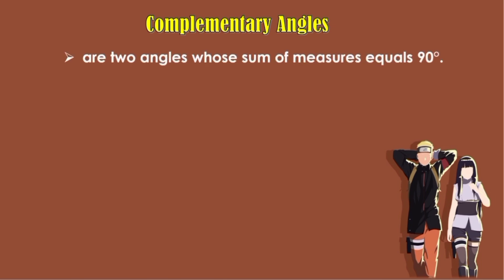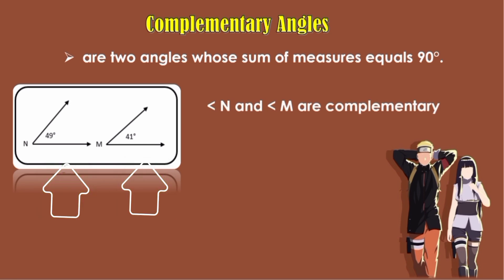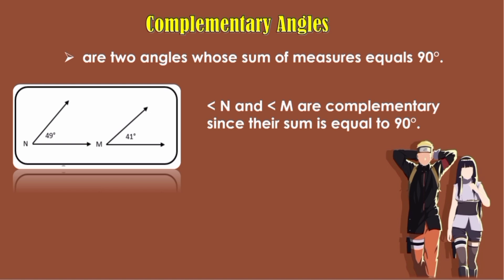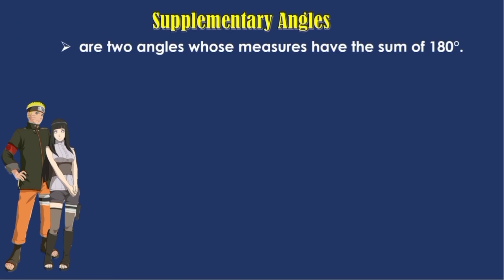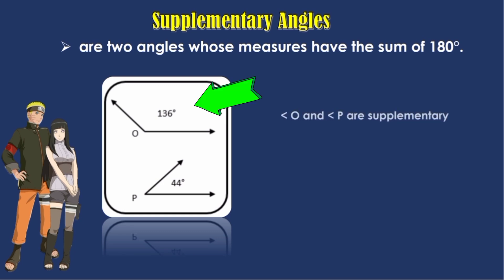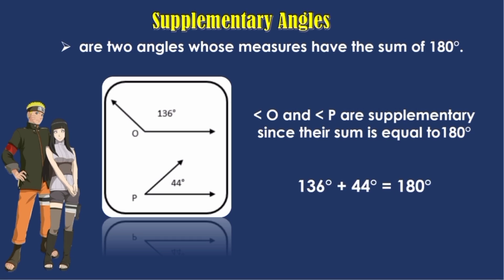Complementary angles are two angles whose sum of measures equals 90 degrees. Angle N and angle M are complementary since their sum is equal to 90 degrees: 49 degrees plus 41 degrees is equal to 90 degrees. Supplementary angles are two angles whose measures have the sum of 180 degrees. Angle O and angle P are supplementary since their sum is equal to 180 degrees: 136 degrees plus 44 degrees is equal to 180 degrees.